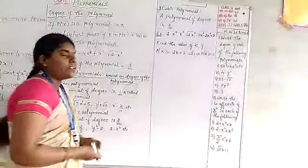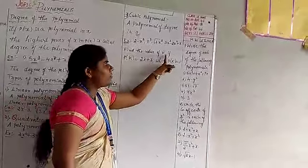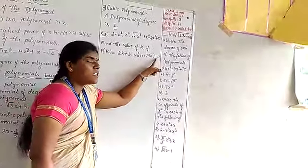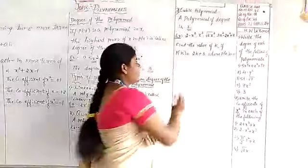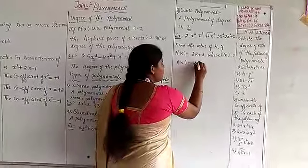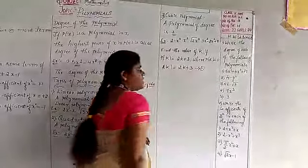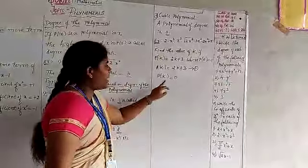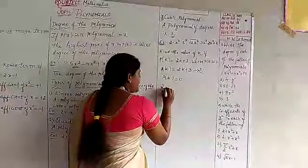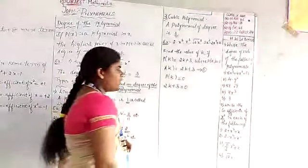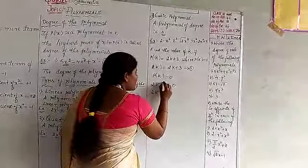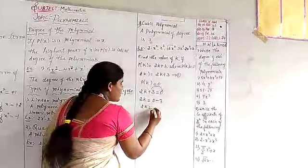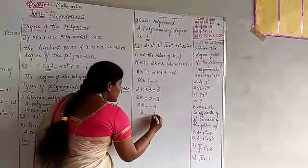You will also learn how to find the value of k. Find the value of k if p(k) = 2k + 3, when p(k) = 0. The polynomial is p(k) = 2k + 3 — call this equation 1. The given condition is p(k) = 0. Substituting into equation 1: 2k + 3 = 0, so 2k = −3, therefore k = −3/2.